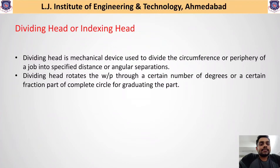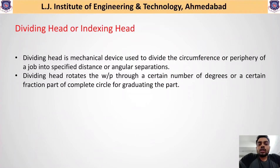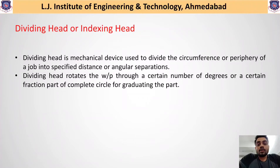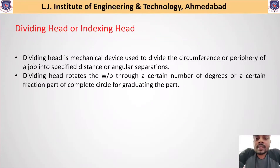This dividing head rotates the workpiece through a certain number of degrees or a certain fraction of a complete circle for graduating the part. For example, if on any workpiece we want to obtain 14 equal divisions — say 14 number of teeth — there must be equal distance between all those teeth. To obtain that equal distance during machining operation, this type of dividing head or indexing head is used.